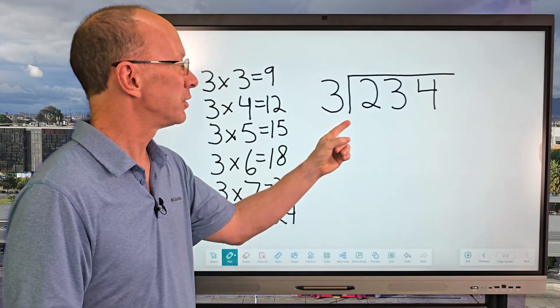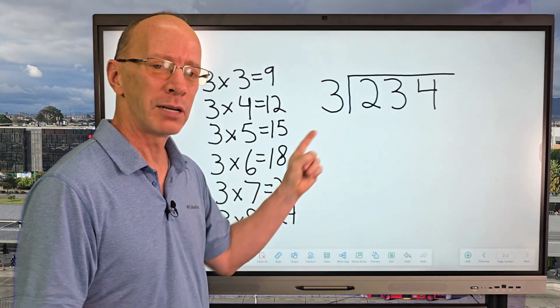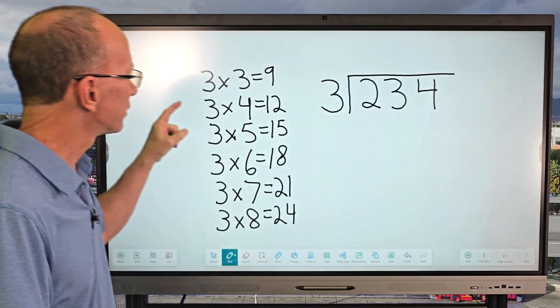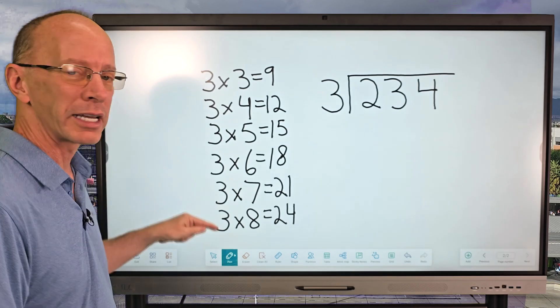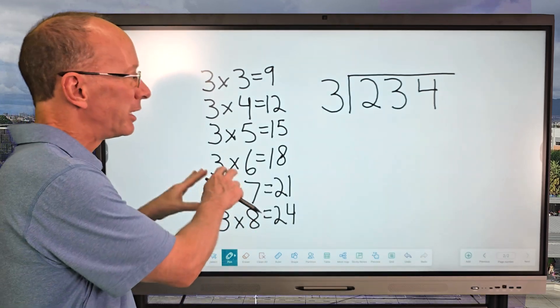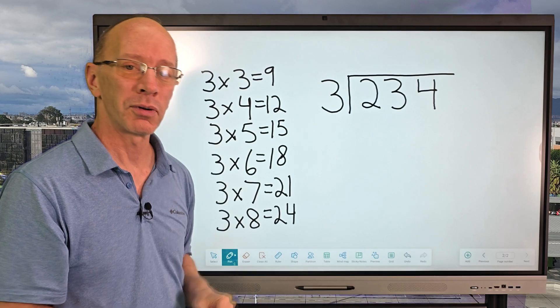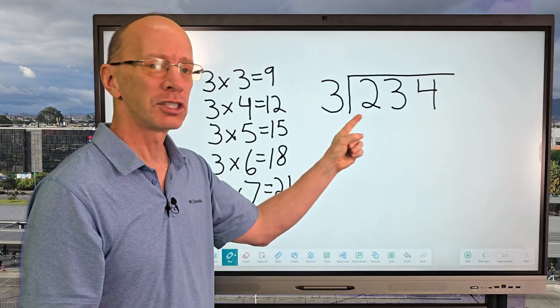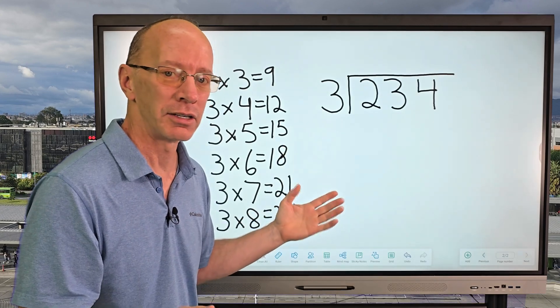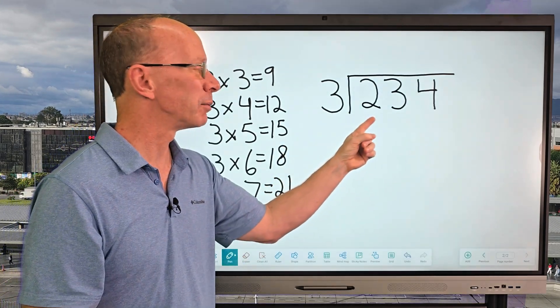So I have 234 divided by 3. Over to the side here, if you don't know your multiplication, it's always useful to write down your multiplication numbers because you're going to be using this to solve this problem. So to begin with, can I put 3 into 2? You can't. It's too small. So I need to go over to the next number, 23.